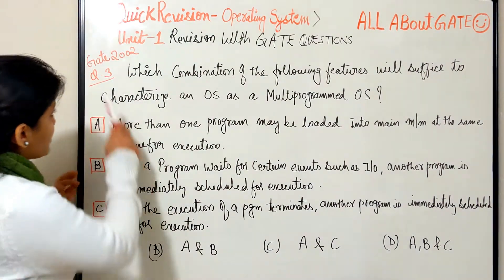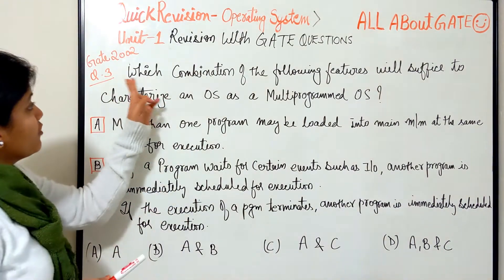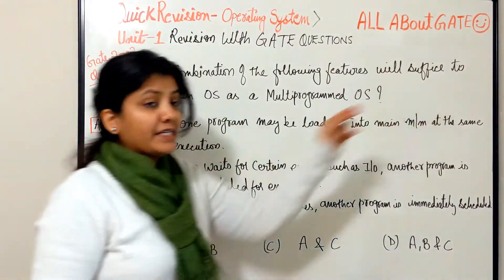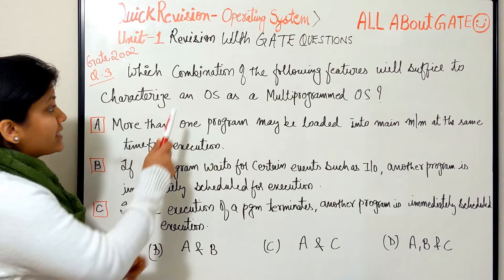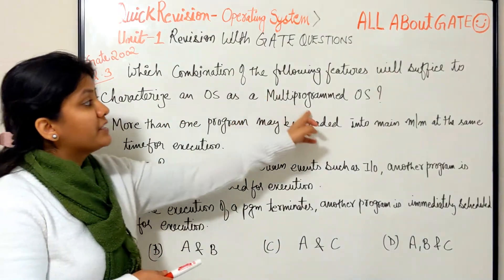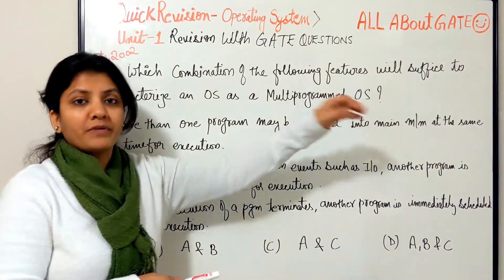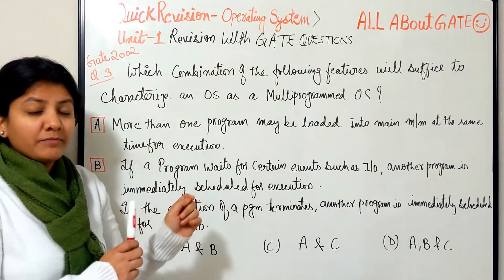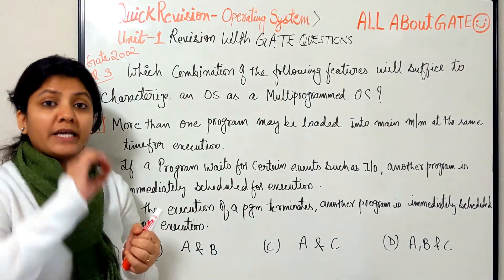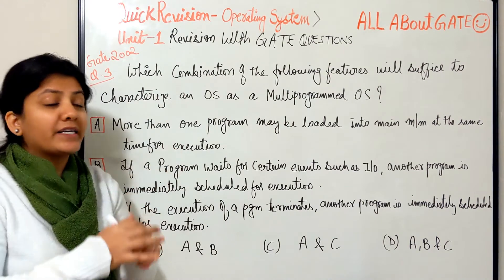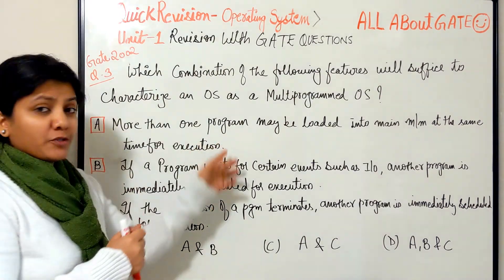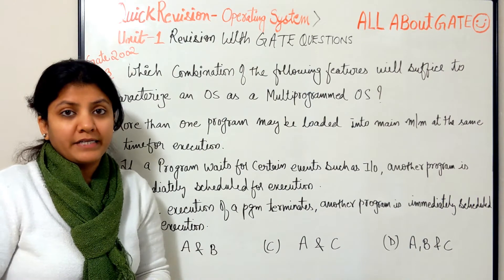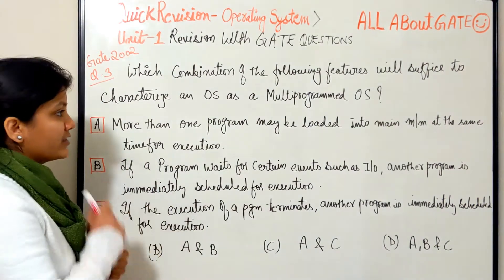The question asks: which combination of the following features will suffice to characterize an operating system as a multi-programmed operating system? That means, which of the given statements supports the definition — if it is present in a system, then that system is a multi-programmed operating system.